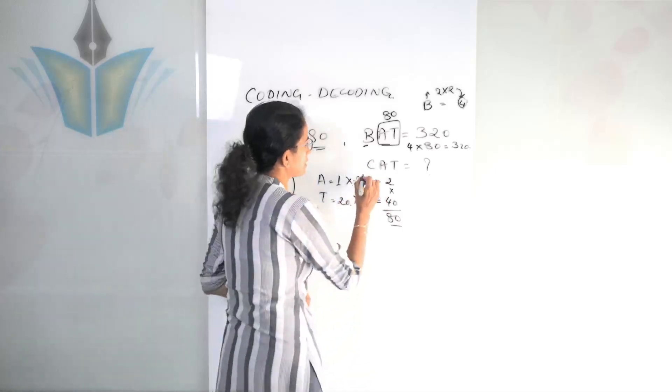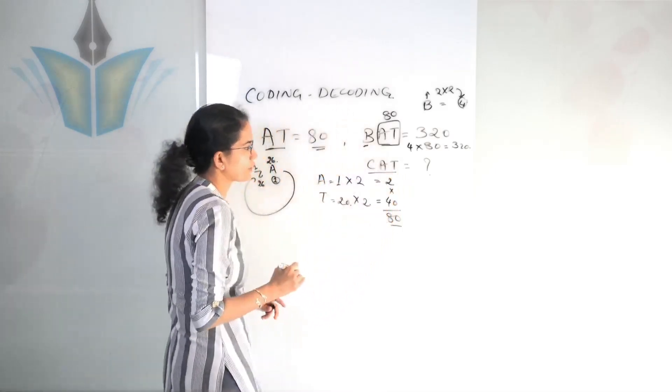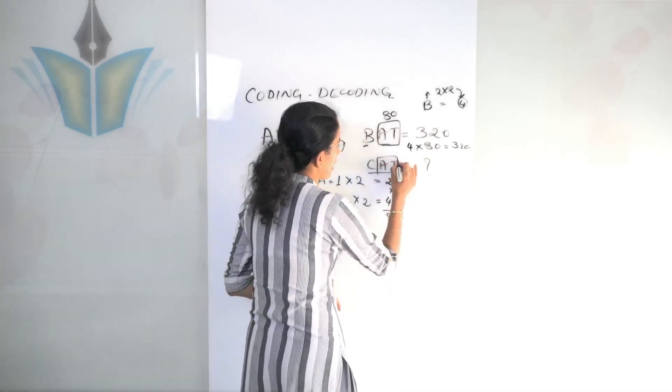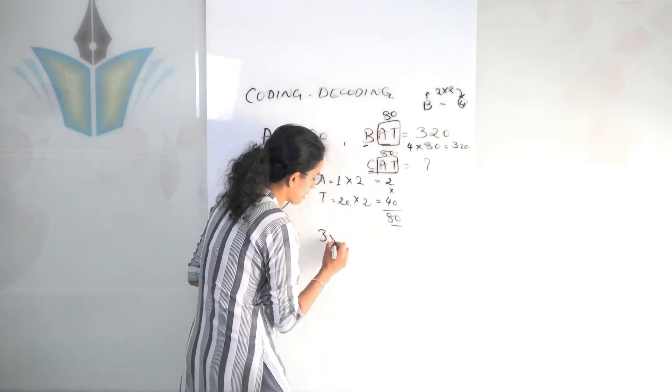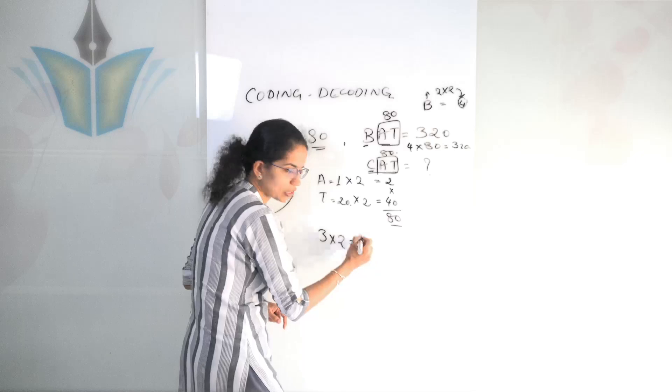Now, if I have to find the same for CAT, how would I do it? Again, 80 I know is 8080. C is the third alphabet. So third alphabet multiplied by 2, which gives you 6 again.